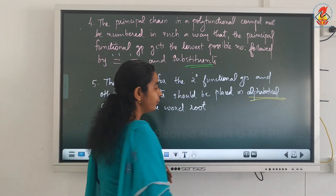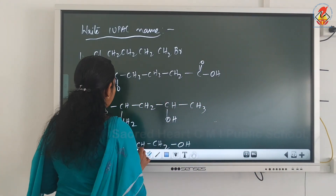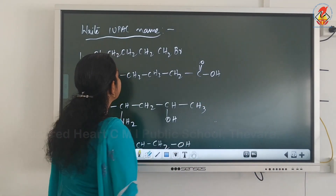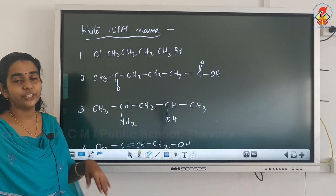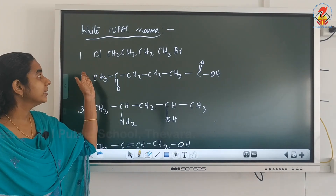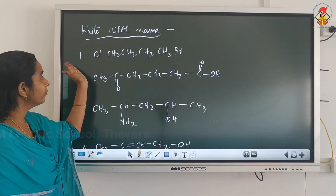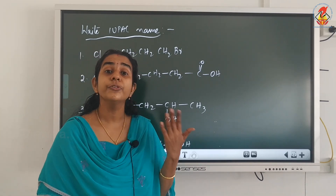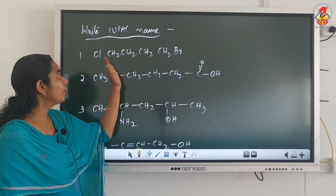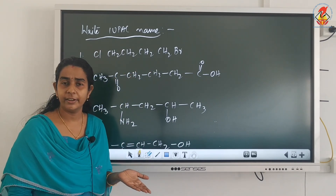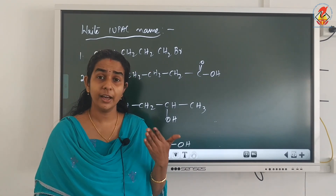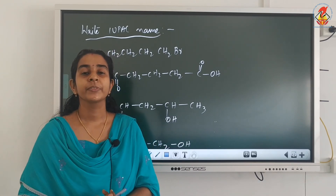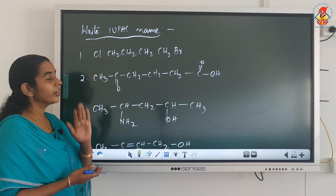Now we will see a few examples to write the IUPAC name. In the first compound, it is a straight chain compound, so we can do the numbering either from left to right or right to left. Before that, we have to see the functional groups present. Here, bromine and chlorine are present. They are not considered as functional groups in the priority sense — they are treated as substituents with least priority. There is no other functional group present.